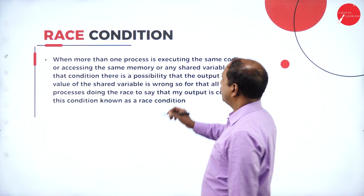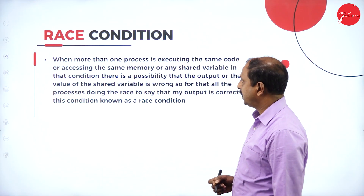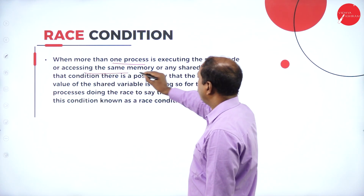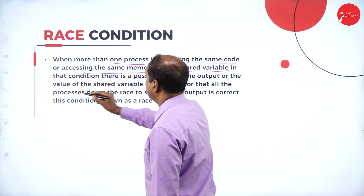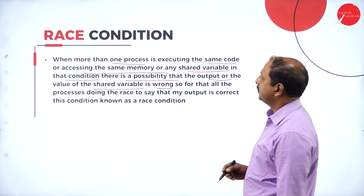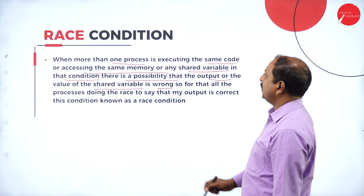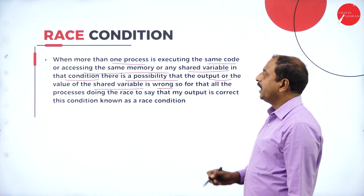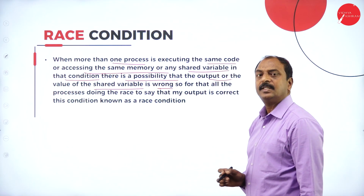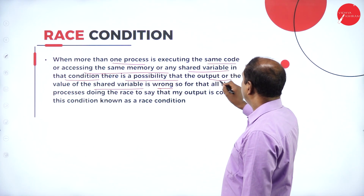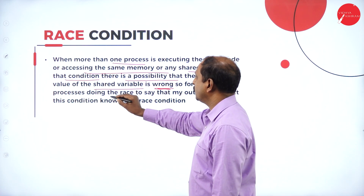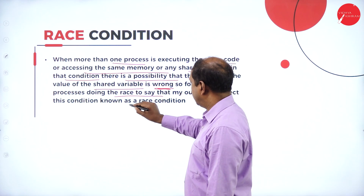Now let us see another technical term: race condition. When more than one process is executing the same code, accessing the same memory, or accessing shared variables, there is a possibility that the output or the value of the shared variable is wrong. If there are more than one processes running in a system and they access the same memory, same variables, or same resources, there are chances of getting wrong output. All processes race to claim that their output is correct — this is called race condition.